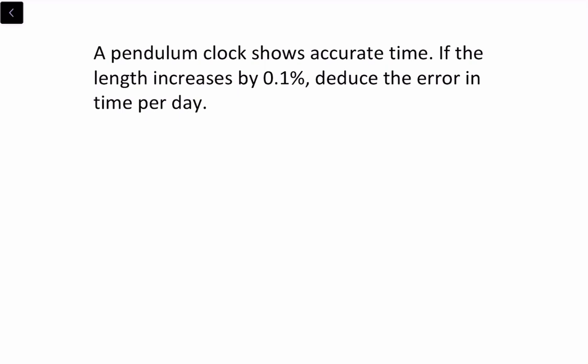So let us solve this problem. Actually, this clock shows accurate time, but the length of the pendulum is increased by 0.1%. Then naturally it shows an error. Let us assume that the error is x and let us solve the problem.